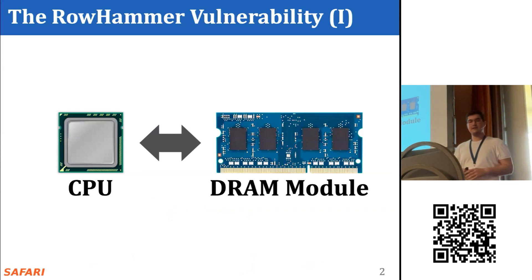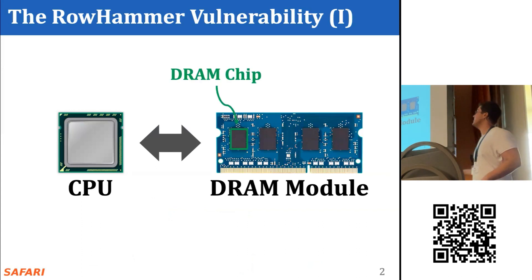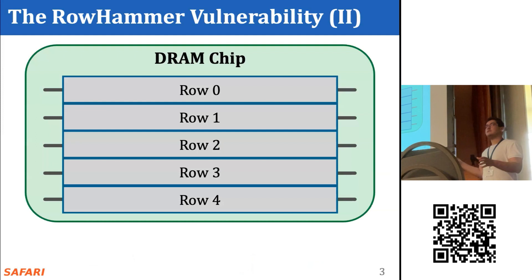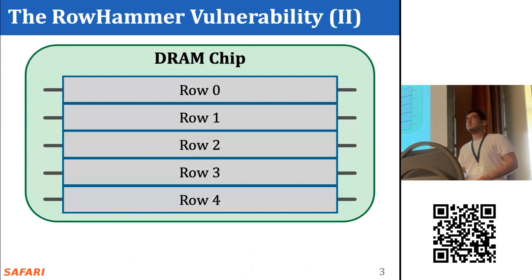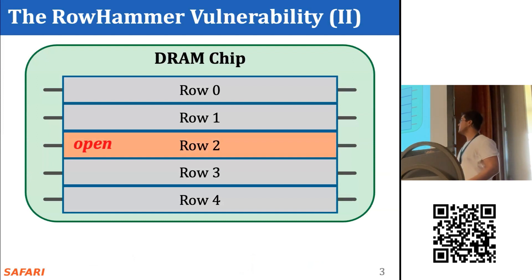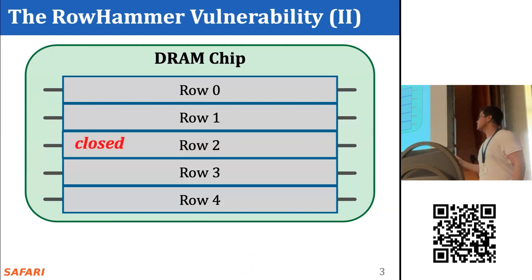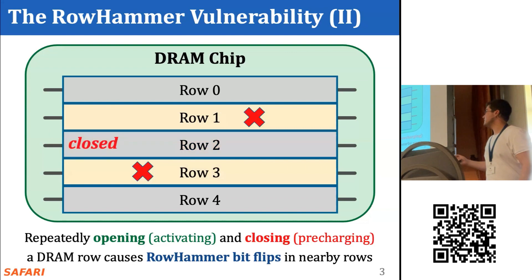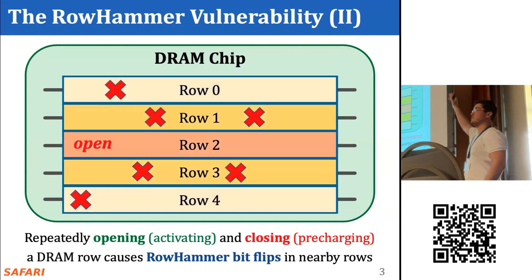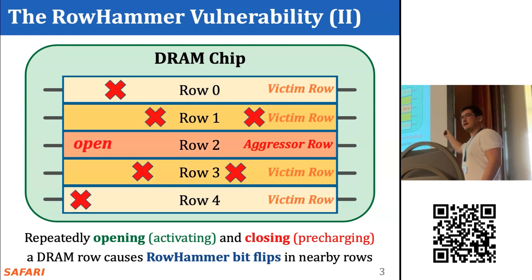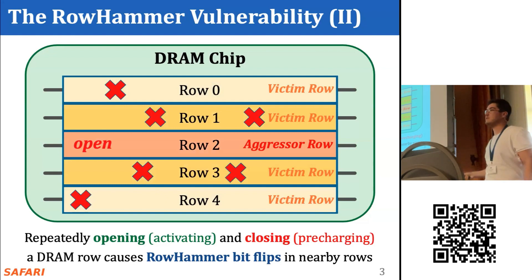Let me first explain the RowHammer vulnerability. This is a typical DRAM-based system where we have a CPU and a DRAM module. This simple DRAM chip contains many DRAM rows. In order to access data in a row, the memory controller must first open this row. When it's done, it closes the row to access another row. Doing this repeatedly — opening and closing a row — induces bit flips on neighboring rows, and doing it even further increases the blast radius and induces bit flips on many other rows.